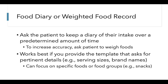A food diary or weighted food record can be a good way for patients to monitor their own intakes, but also to provide you with detailed information about a representative day or week of eating. You would ask the patient to keep a diary of their intake over a predetermined period of time. To increase accuracy, you can ask the patient to weigh each food before and after they eat it, so you obtain good data on the amount consumed. This approach works best if you provide a template that asks for pertinent details such as serving sizes and brand names, which will allow for more accurate estimation of calories and nutrients. This approach works well with motivated patients who want to learn more about their own dietary patterns.